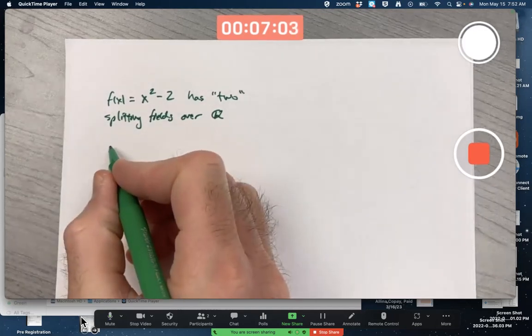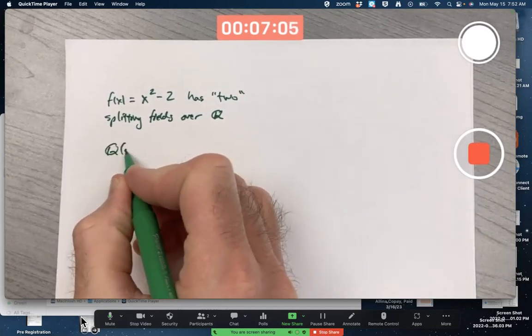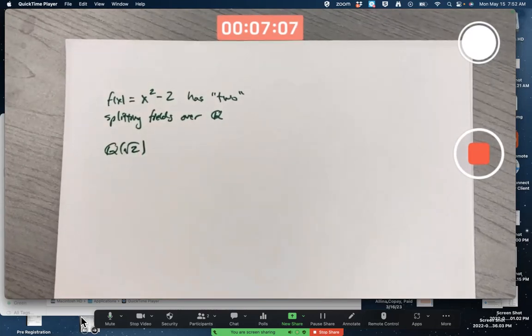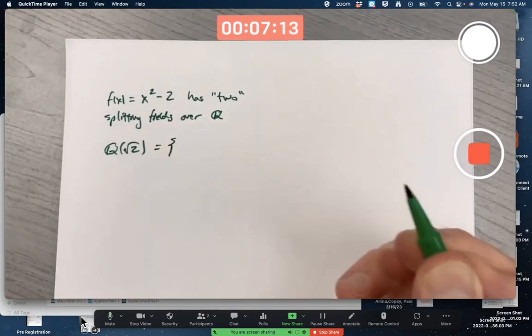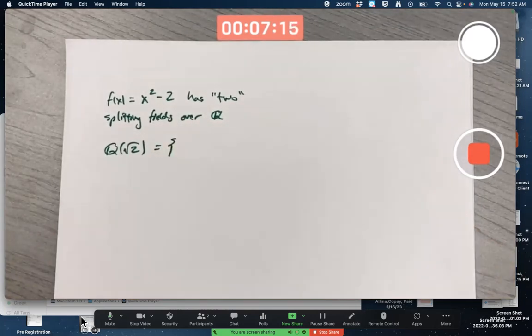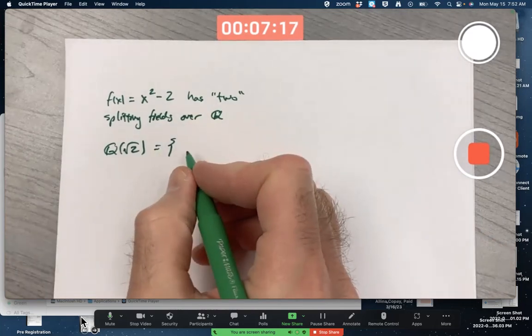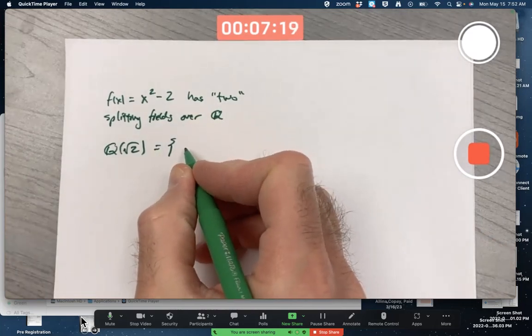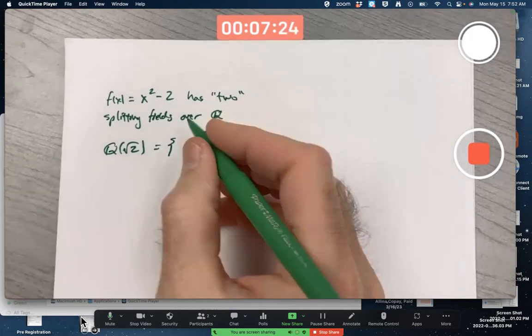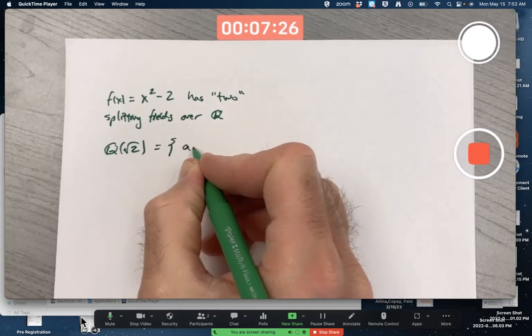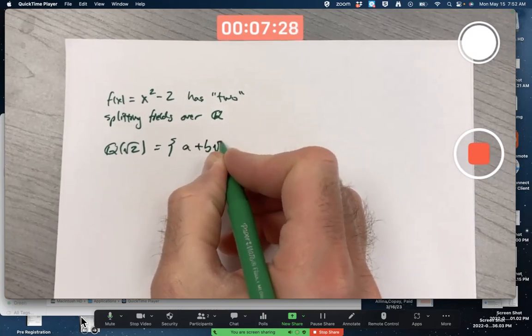One of them is Q adjoin √2, which as I've emphasized many times, you should be dreaming about this one. Q adjoin √2 is not just all the rationals and one number √2, it's many more, it's all the numbers of the form a + b√2.